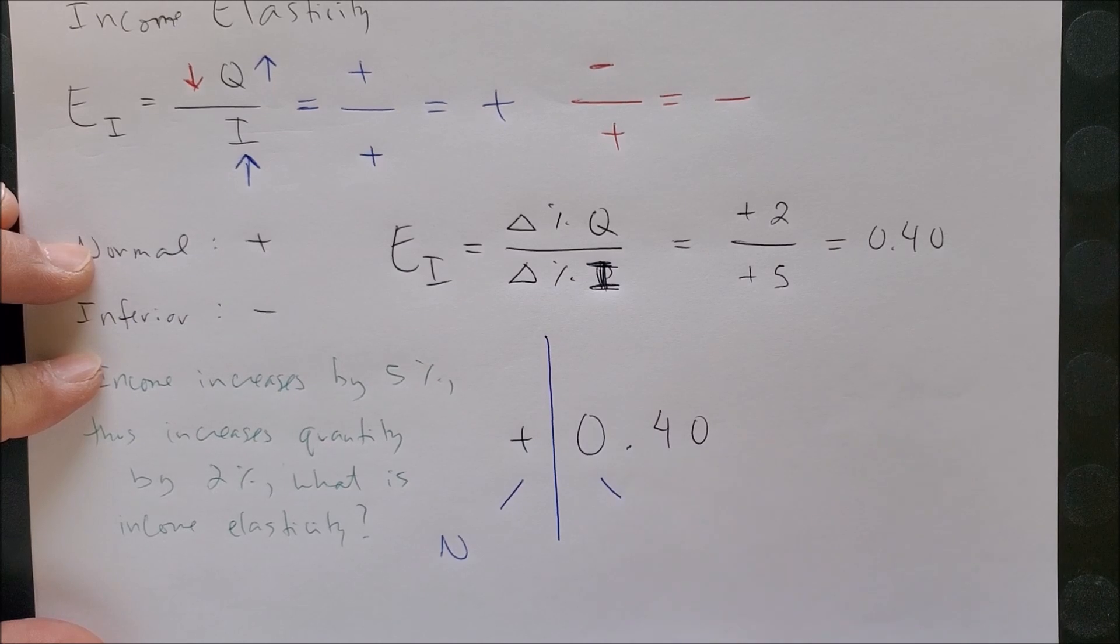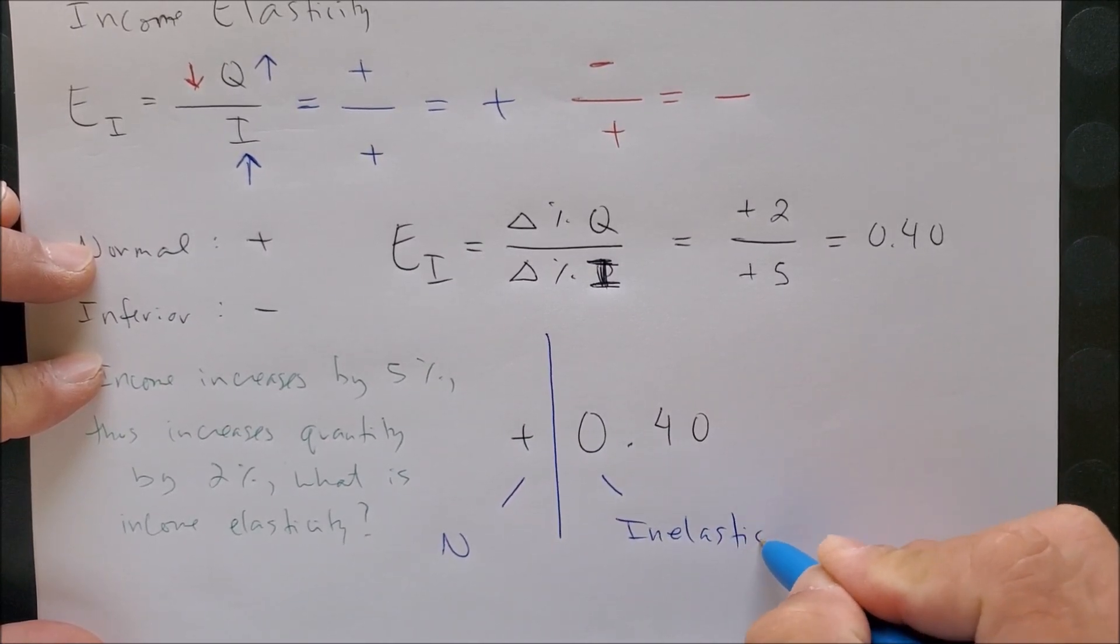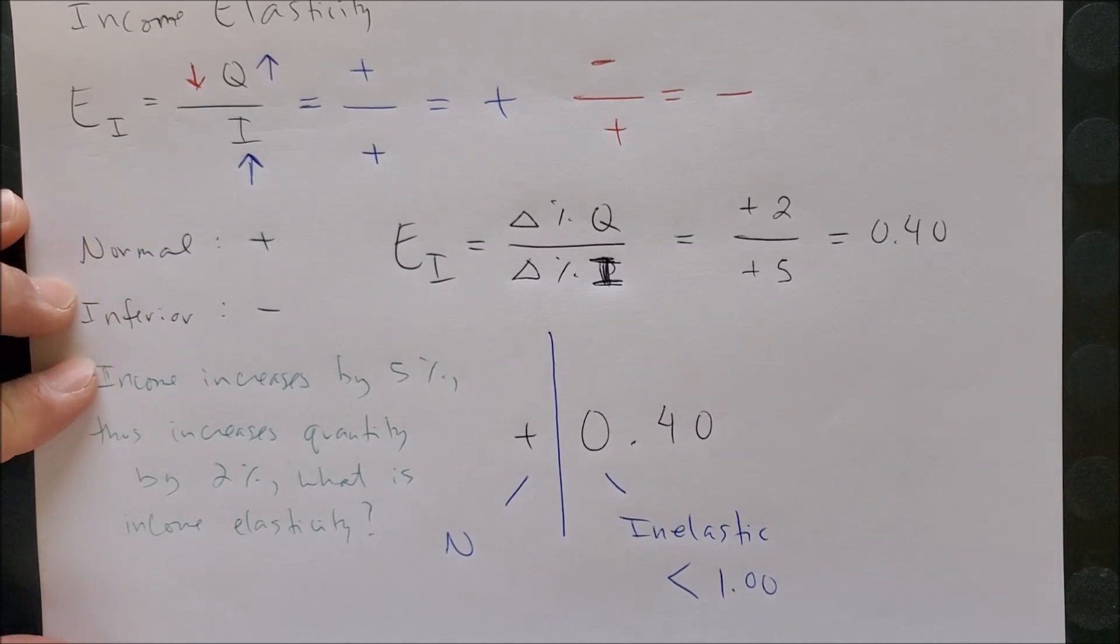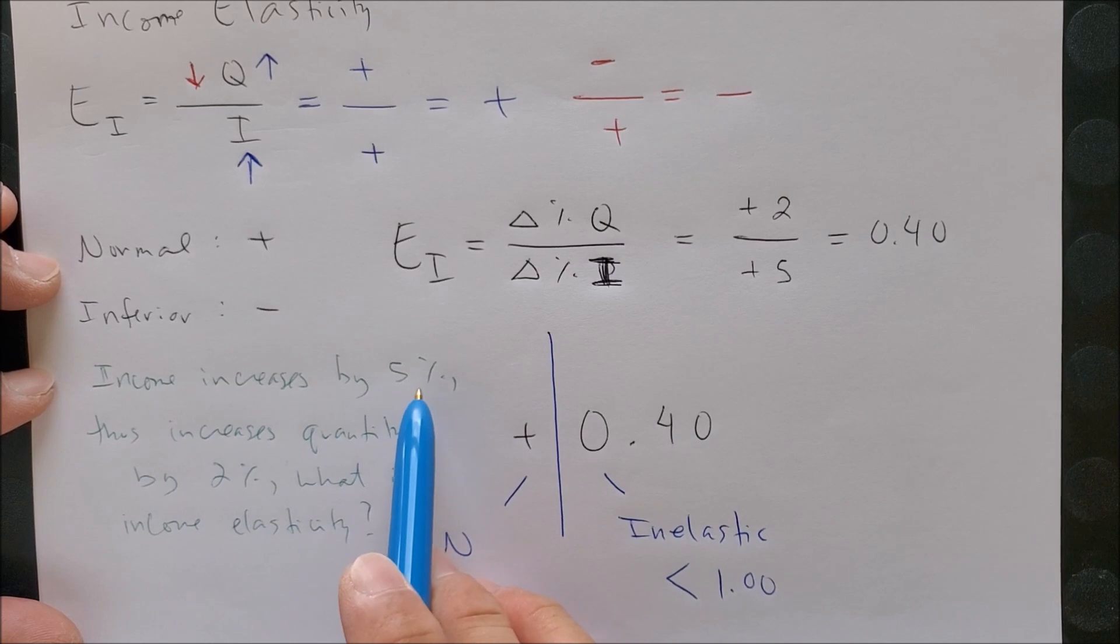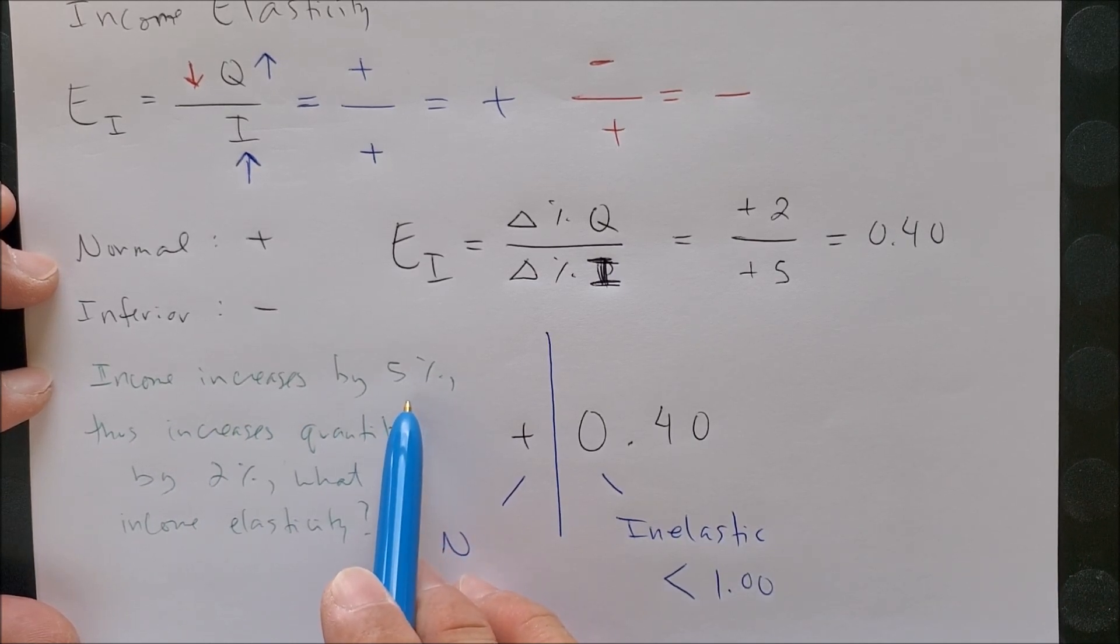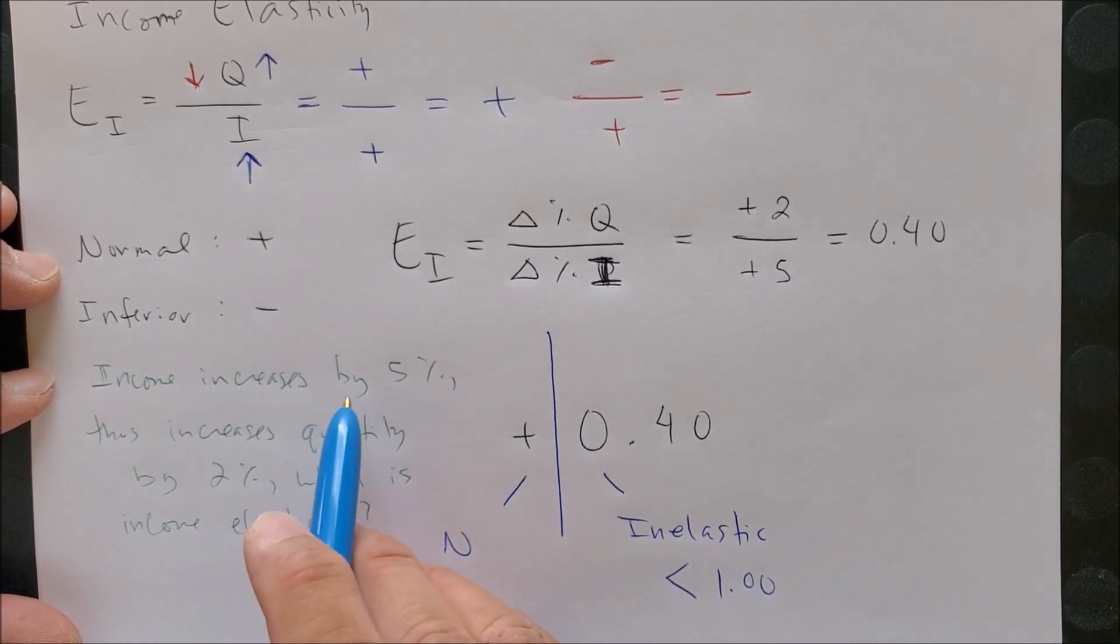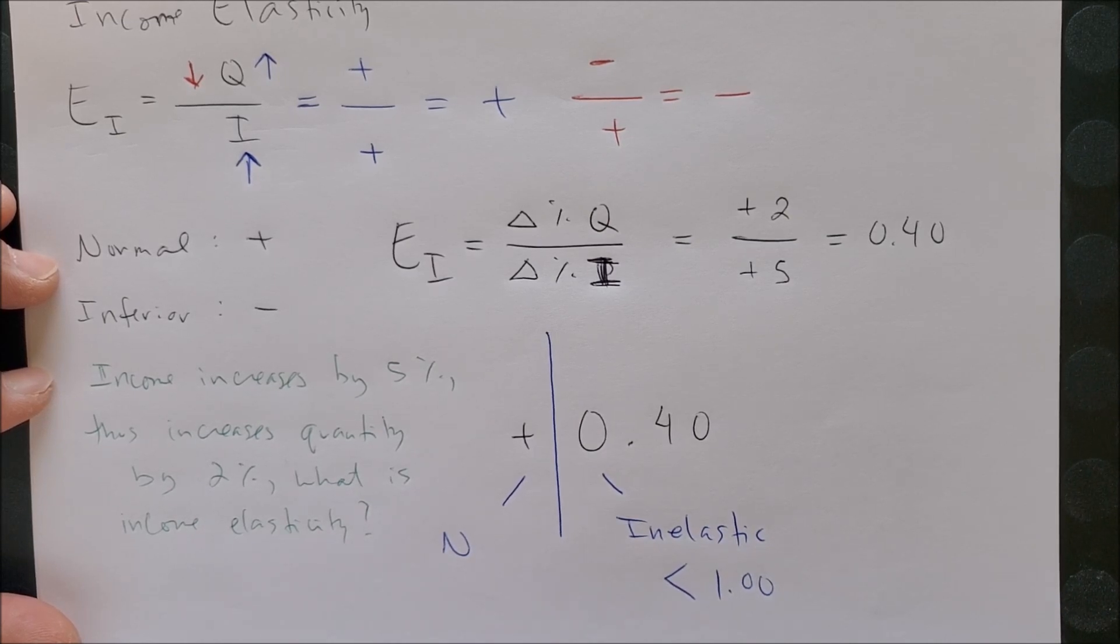And 0.4 represents elasticity. In this case, it is inelastic because 0.4 is less than one. So what we can say is when there is an increase in income of 5%, your response is inelastic—slow to consume more of this good. And even though it's a normal good, even though your income is increasing, your income is not increasing enough to where you are going to consume the good at a faster rate.